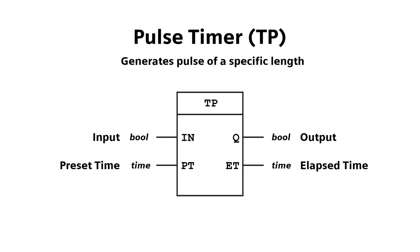The preset time is the length of our pulse — remember, this timer is used for generating pulses of a specific length. The elapsed time is how long the pulse has been activated for.